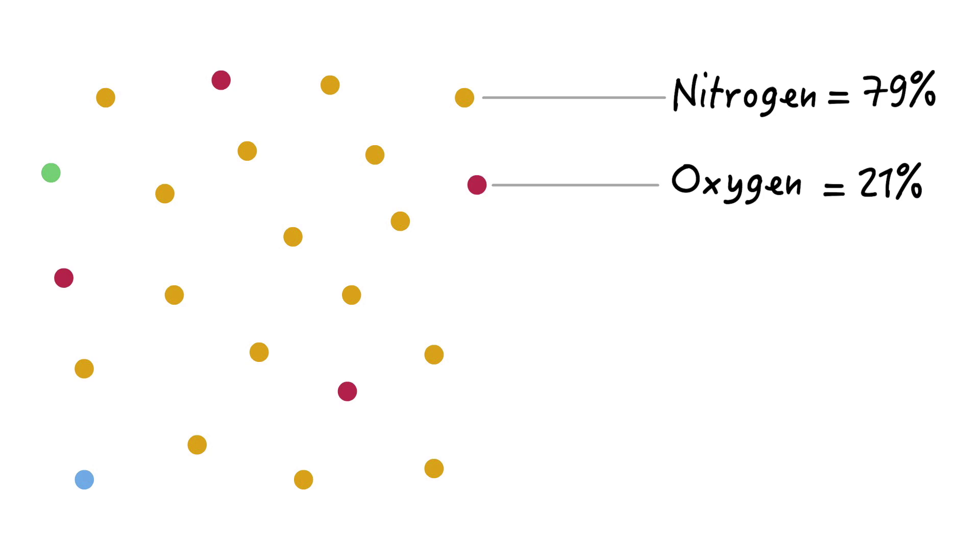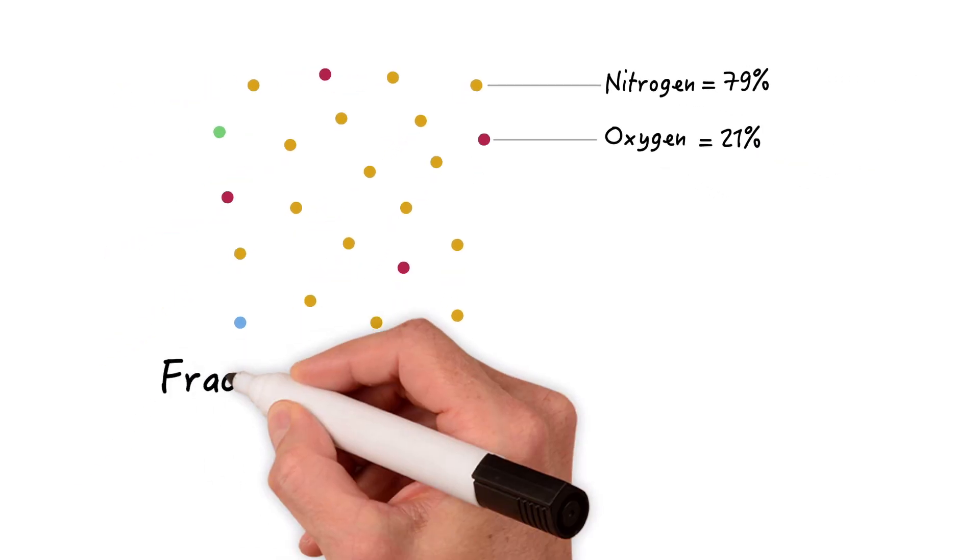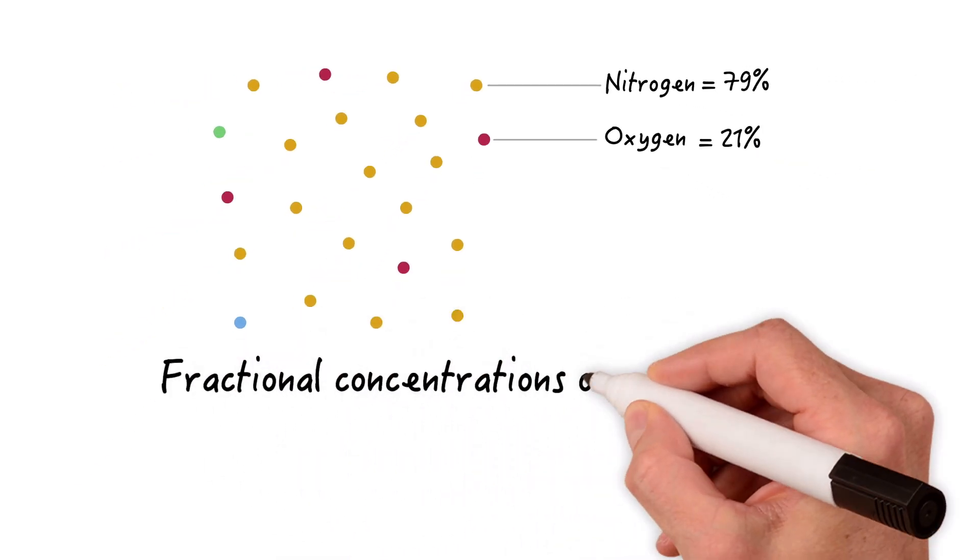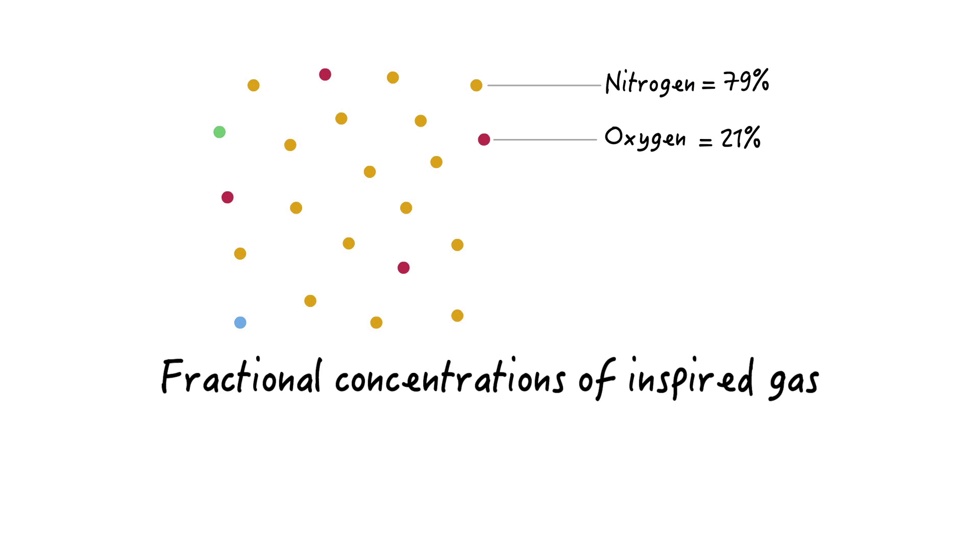Just as we did for our example gas mixture, we can express the concentrations of gases in the air around us in terms of fractional concentrations. And since this is the air we breathe in, we can express them as fractional concentrations of inspired gas X, FIX. For oxygen, FIO2 is 0.21 and for nitrogen, FIN2 is 0.79.